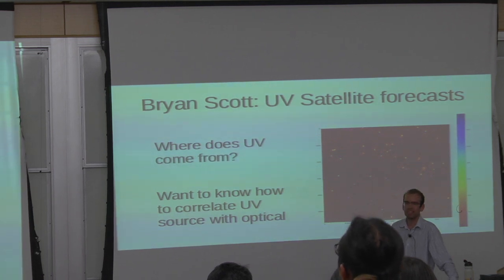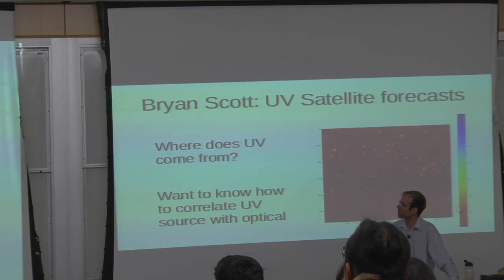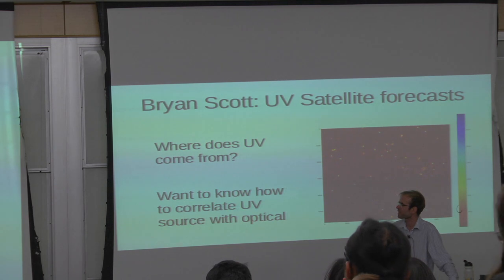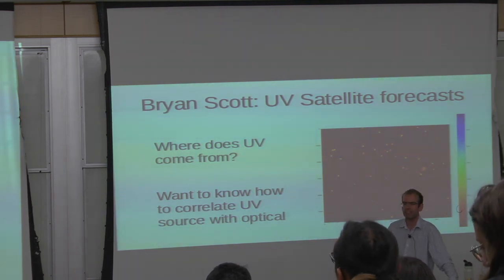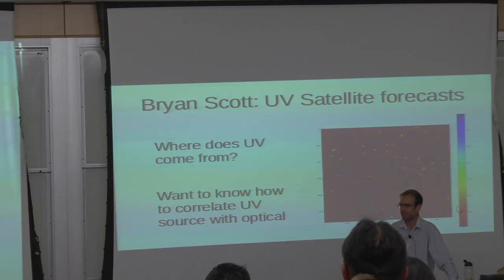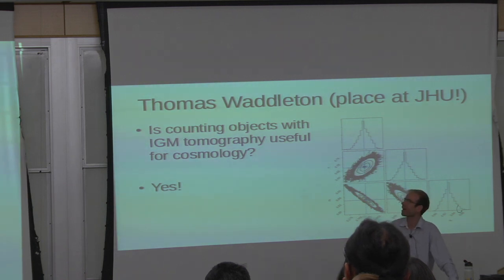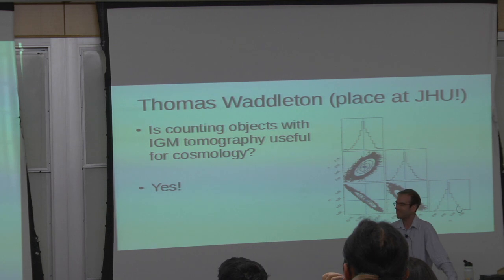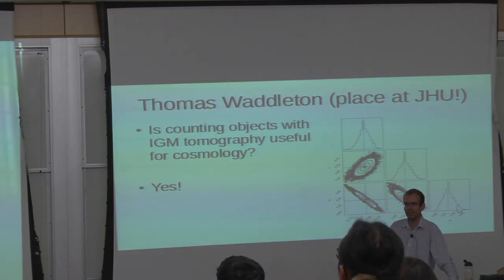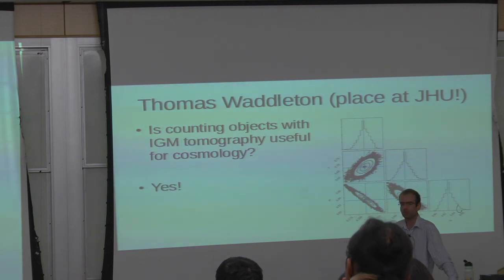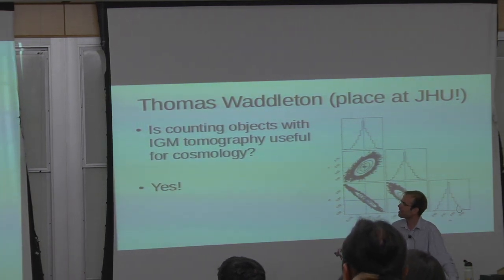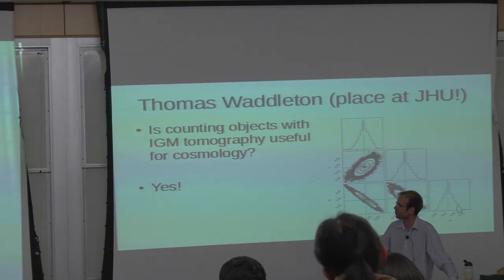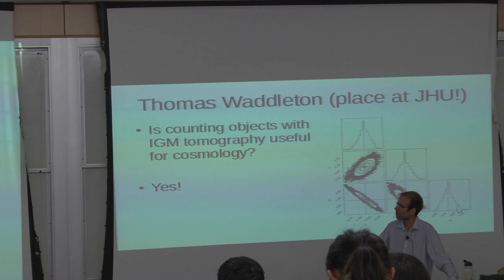Brian Scott has been working on making forecasts for UV satellites — correlating sources of UV photons with optical sources. I also have an undergraduate, Thomas, who is going to do a PhD at Johns Hopkins. His project was to work out whether counting objects with IGM tomography — the subject of a recent colloquium — is going to be useful for cosmology. The answer is yes. This is a forecast for Drew's IGM tomography survey, which finds analogies to galaxy clusters at redshift 2, with constraints on useful cosmological parameters such as the density of matter in the universe.